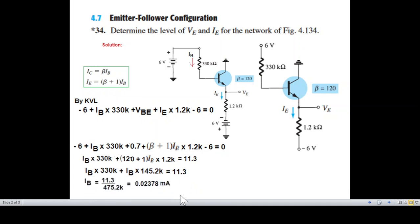Further simplifying, we find IB to be 0.2378 milliampere.